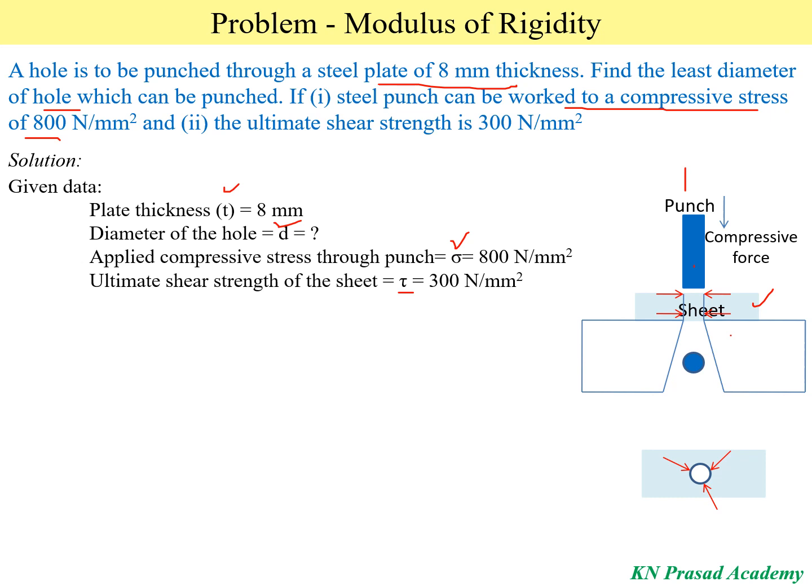During this sheet separation, shear stresses are generated inside the sheet — along its thickness and also along its perimeter. We are applying compressive stresses on the sheet, and the shear stresses generated inside cause the sheet to separate. This is the punching operation.